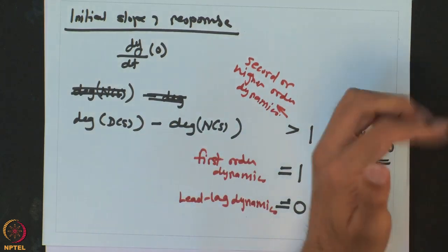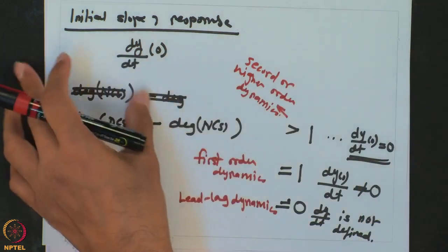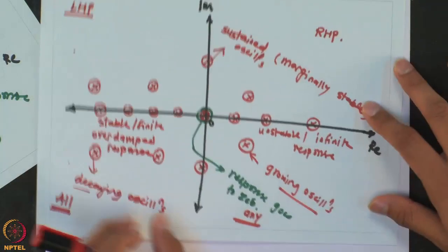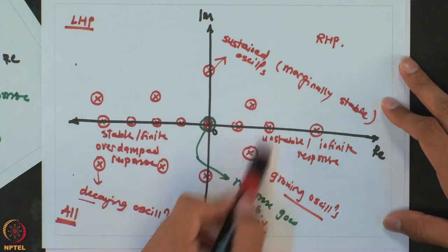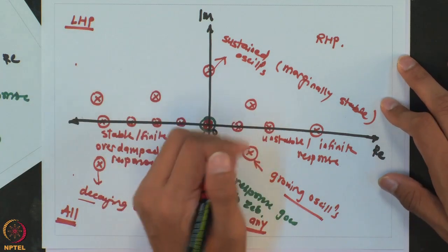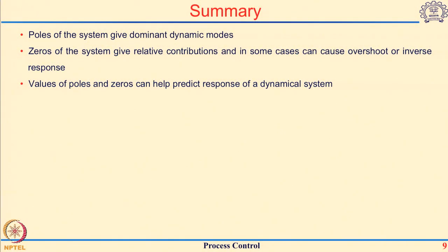By knowing the initial slope — how the response starts — then looking at whether you have overshoot or inverse response, and combining it with whether you have stable, overdamped, growing, or decaying oscillations, you would be able to predict the response of any transfer function for a step change. To summarize: the poles of the transfer function give you the dominant dynamic modes; the zeros give you the relative contribution and conditions for overshoot or inverse response; and together, poles and zeros help you predict the response of any dynamical system.